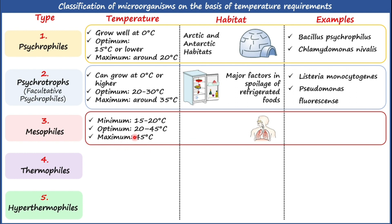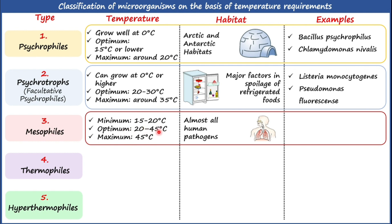The maximum temperature supporting mesophile growth is 45°C. We can easily isolate mesophiles from the human body — almost all human pathogens are mesophilic because the human body maintains a fairly constant temperature of 37°C, which falls within the optimum temperature range of mesophiles (20–45°C).